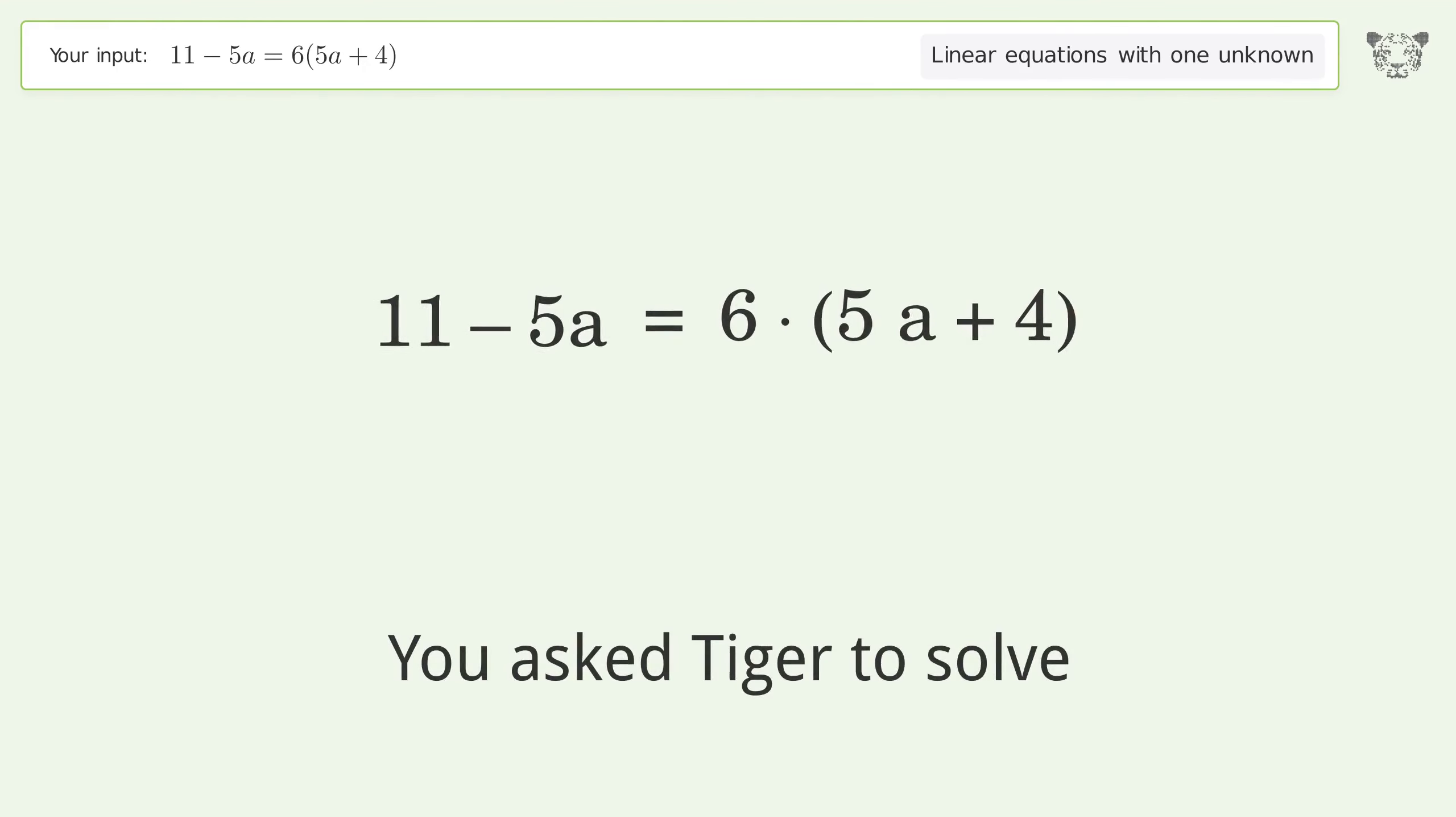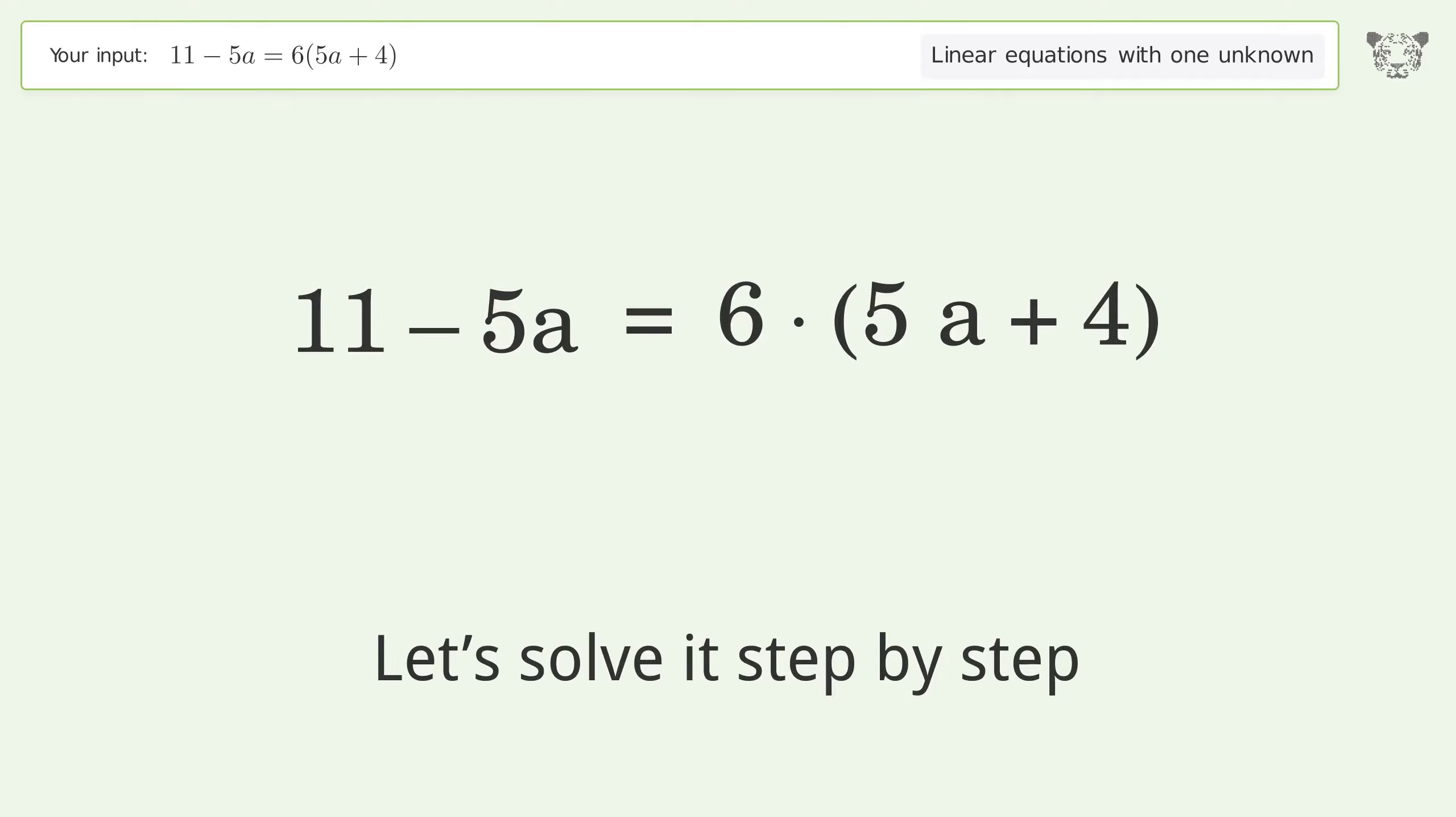You asked Tiger to solve this problem which deals with linear equations with one unknown. The final result is a equals negative 13 over 35. Let's solve it step by step.